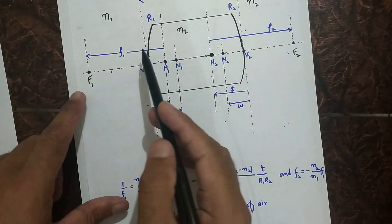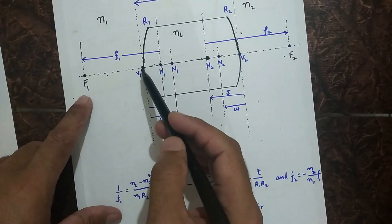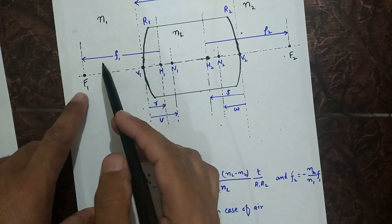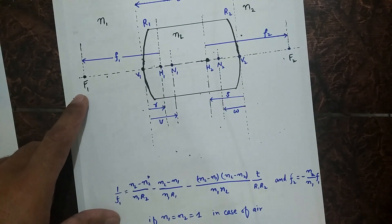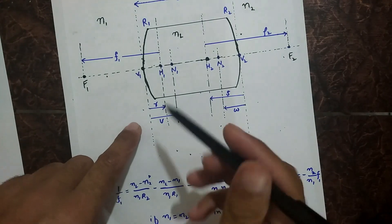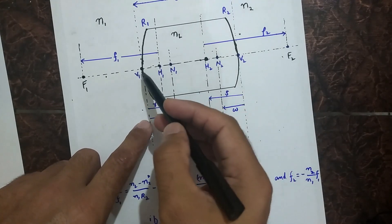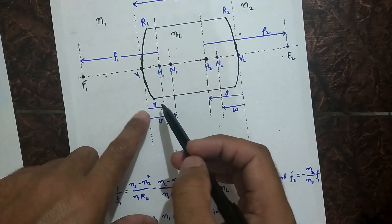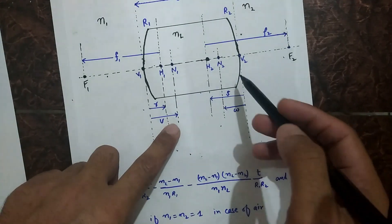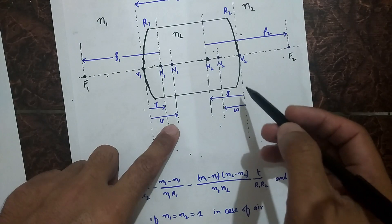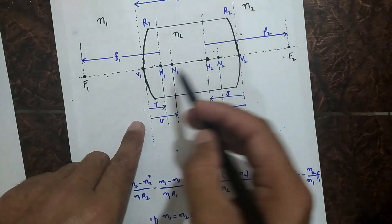The quantities f1 and f2 determine the focal length positions relative to the principal points H1 and H2. Notice that the focal lengths are not measured relative to the vertices — they are measured relative to the principal points. Similarly, the positions of the nodal points and principal points with respect to the vertices are represented by r, v, s, and w, and these are measured relative to the vertices.